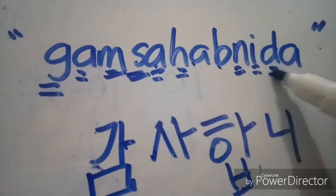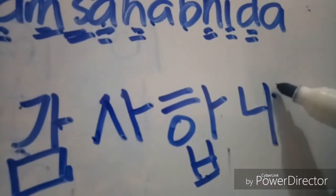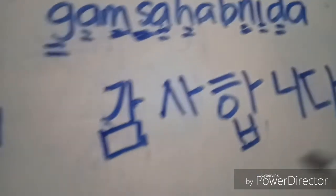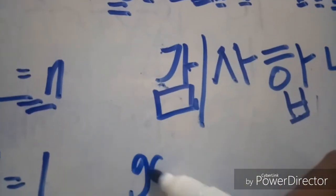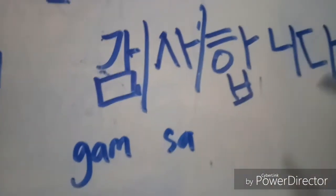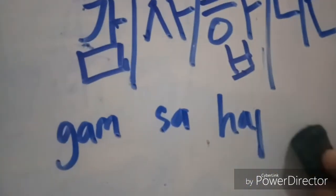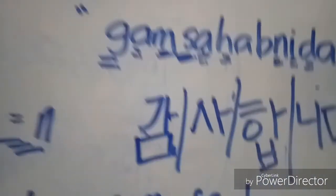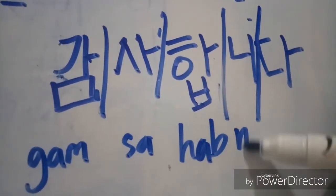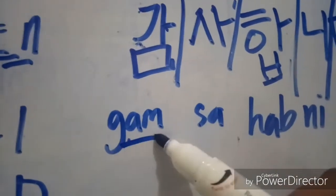And then the next one is letter D, and then letter A. So this is KAM, this one is SA, this one is HAP, this is NI, and this one is DA. So we have KAM-SA-HAP-NI-DA. This is KAM — three letters but read as one syllable.